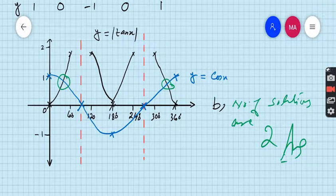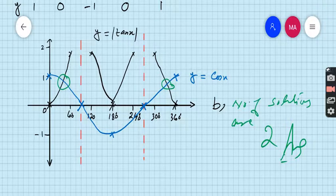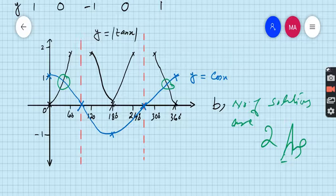You can see if you solve the equation tan x absolute function equals cos x, it is very difficult analytically to find the number of solutions. But graph did a good work. Graph eased this work. Graph can ease any work, any mathematical work.